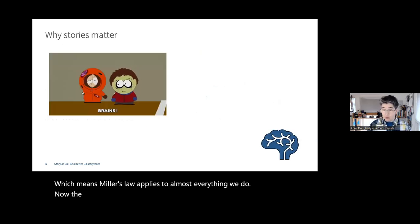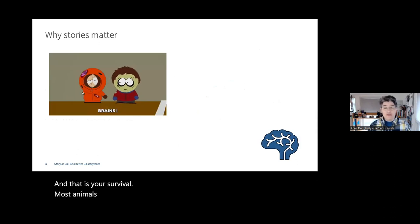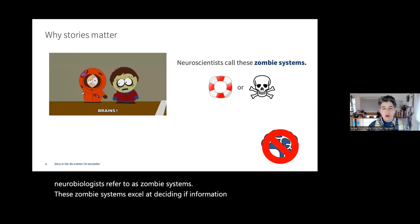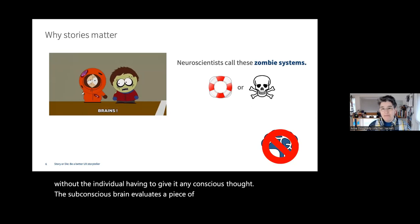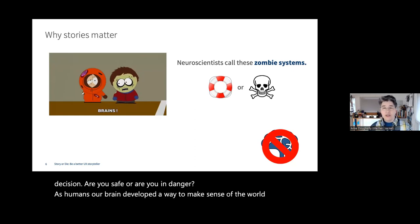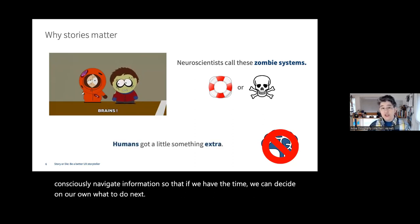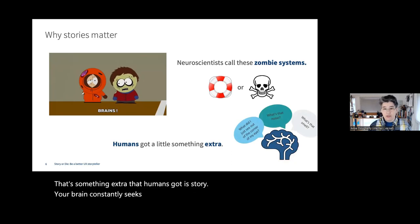The subconscious brain has exactly one goal: your survival. Most animals navigate the world using innate reflexes that neurobiologists refer to as zombie systems. These zombie systems excel at deciding if information is helpful or harmful without requiring conscious thought — the subconscious brain makes a snap decision: are you safe or are you in danger? As humans, our brain developed a way to consciously navigate information so that, if we have the time, we can decide on our own what to do next. That something extra that humans got is story.